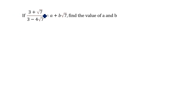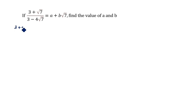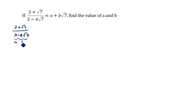Next question: if 3 plus root 7 divided by 3 minus 4 root 7 is equal to A plus B root 7, find the value of A and B. Looking at the denominator, it is in a-b format with only two terms.